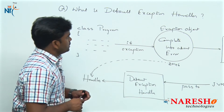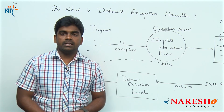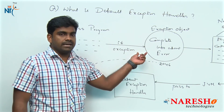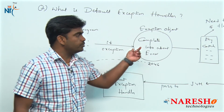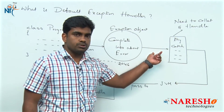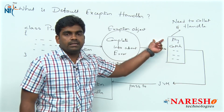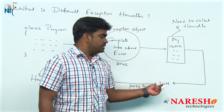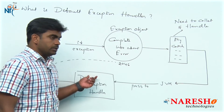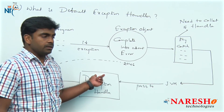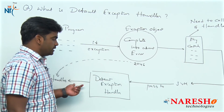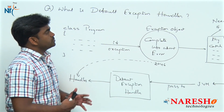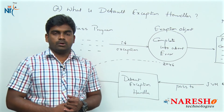So this is the concept of a default exception handler and what it will do. Whenever an exception object has raised, we have to handle it — they are giving a chance to us to handle it. If you are not handling, then that object will be transferred to the JVM, and JVM again will pass it to the default exception handler program, which will take care of that exception object. This is the duty of a default exception handler.